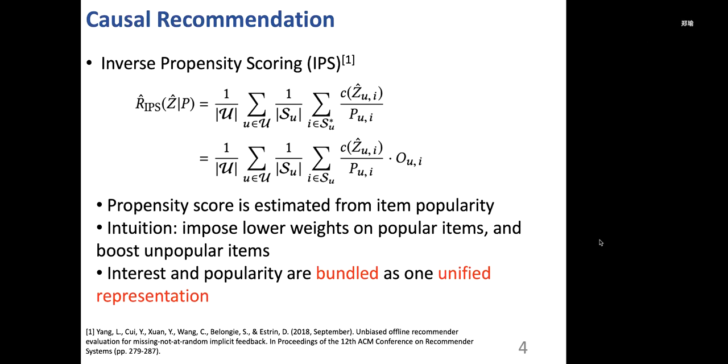Now I will introduce a few existing methods for causal recommendation. The first one is inverse propensity scoring, or IPS. In this method, each example is reweighted by a propensity score, and this propensity score is usually estimated from item popularity. The intuition behind this method is to impose lower weights on popular items and boost unpopular items. However, in this method, interest and popularity are bundled as one unified representation, which means that the two factors are entangled.